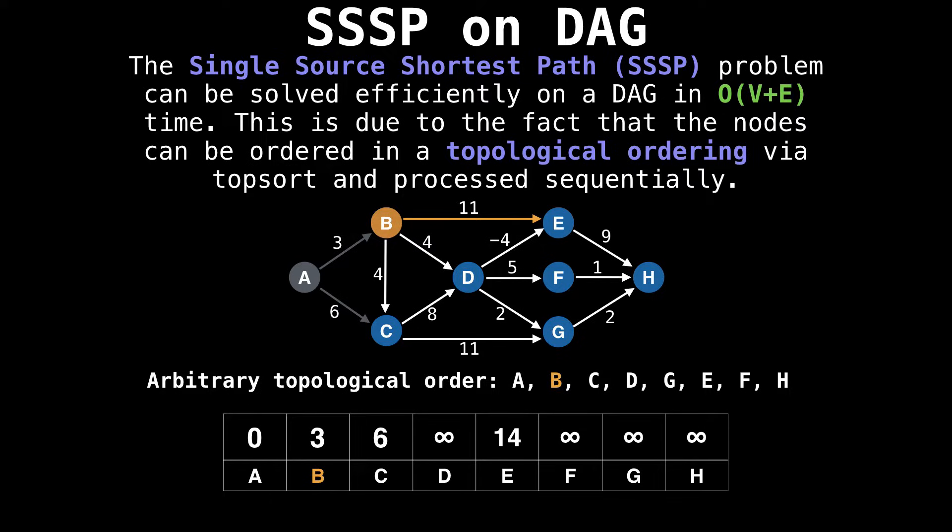So the first edge brings us to node E and we update its best value to 14, because the best value at node B was three plus the edge weight to get to E was 11 for a total of 14.